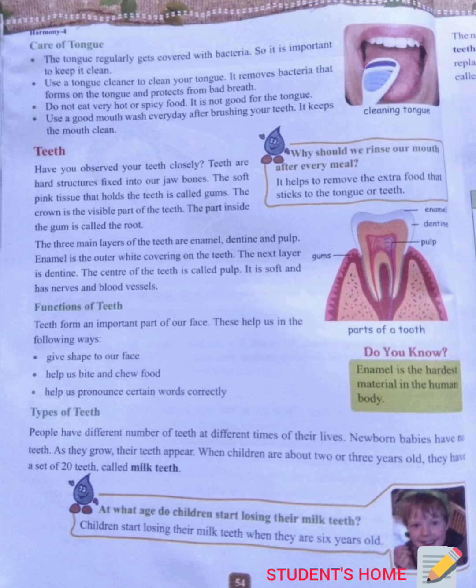The three main layers of the teeth are enamel, dentine and pulp. Enamel is the outer white covering of the teeth. The next layer is dentine. The center of the teeth is called pulp — it is soft and has nerves and blood vessels.